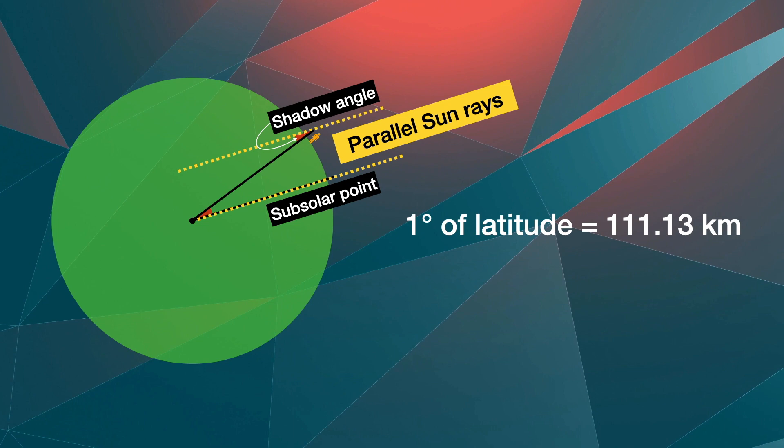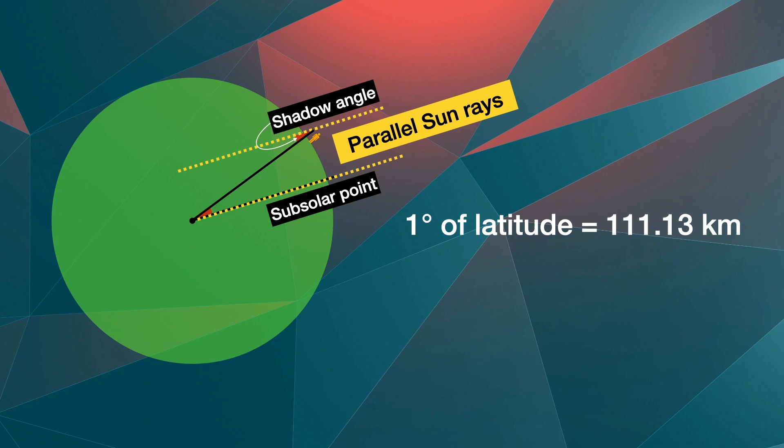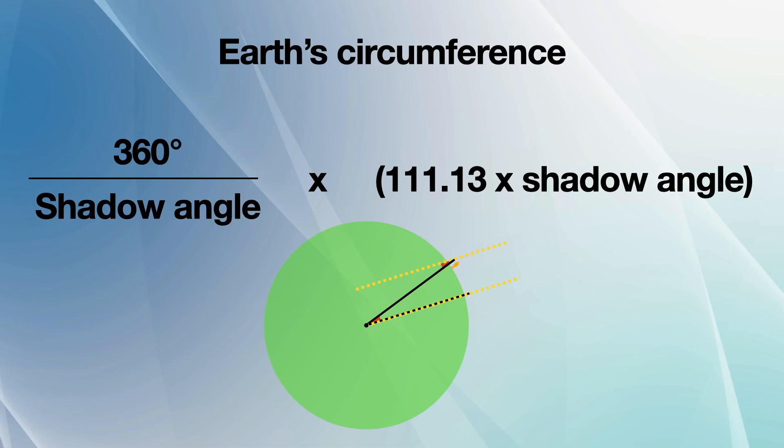To approximate earth's polar circumference, divide 360 by the shadow angle and multiply by the distance.